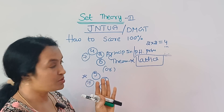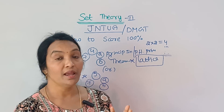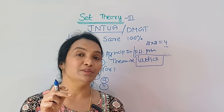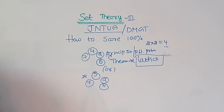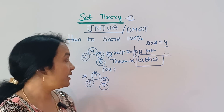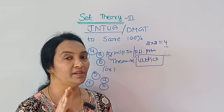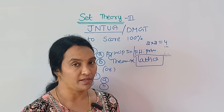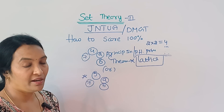This is all about your set theory. But here we also have the recursive function, inverse function, and composition function. We choose the definitions and properties. Composition is worth 2 marks or 5 marks.